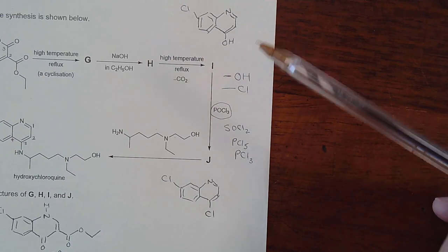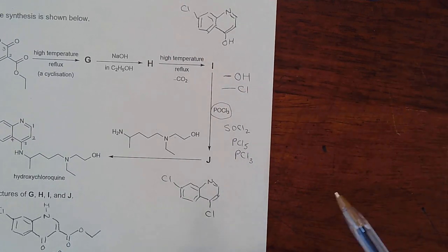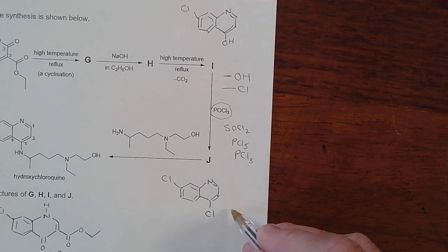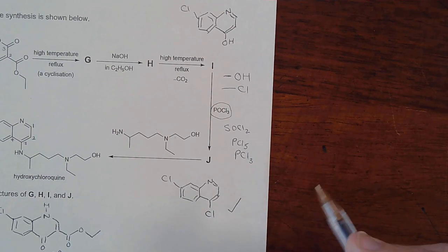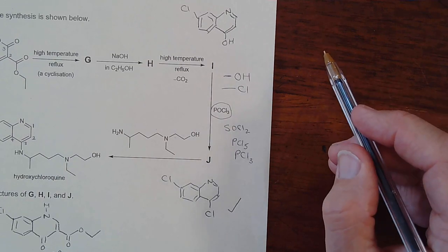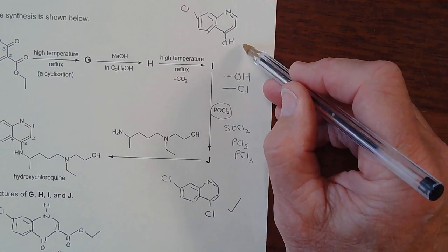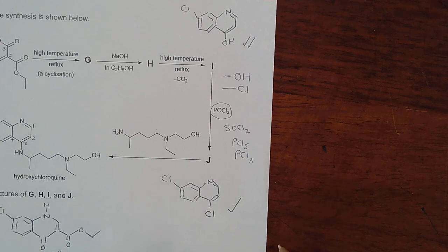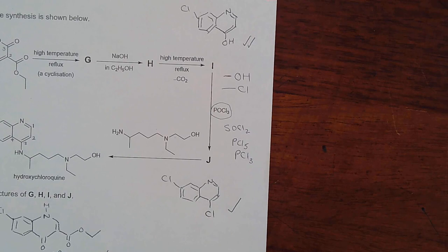In the mark scheme there is only one mark for J, but two marks are awarded for the structure of I — either the C=O form or the OH form. G is also worth two marks in either its C=O or OH form, which is very generous marking.